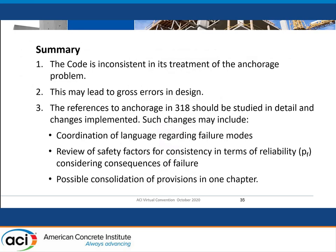Last picture for me: the code is inconsistent. It could lead to gross errors in design — some people may disagree, but I firmly believe that it could. The references to anchorage in 318 need to be studied. We need to coordinate our language. We need to figure out the safety factors. And I'm thinking it might make sense to consolidate all of this stuff in one section. I know there's been a lot of work done to reorganize the code, and maybe we don't have the option to do that anymore. But for me, having all of this stuff in one location would make a heck of a lot of horse sense for the design profession.